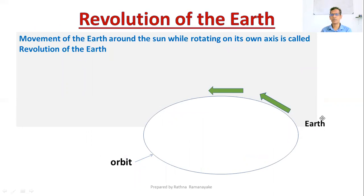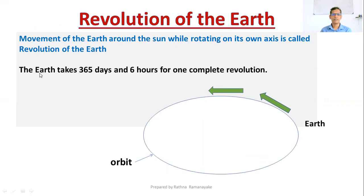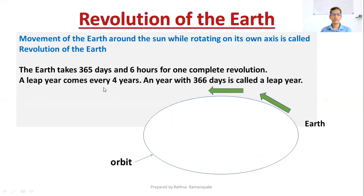What is meant by revolution? The movement of the Earth around the Sun while rotating on its own axis is called revolution of the Earth. The Earth takes 365 days and 6 hours for one complete revolution. A leap year comes every 4 years.